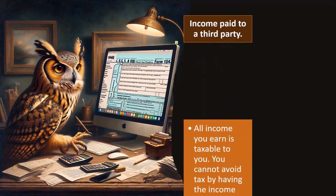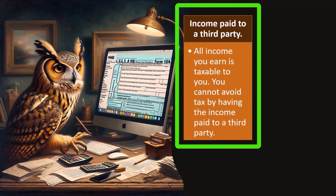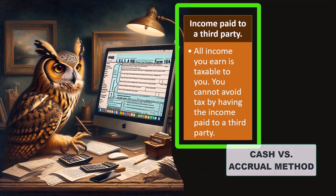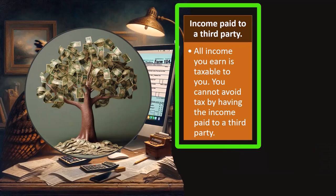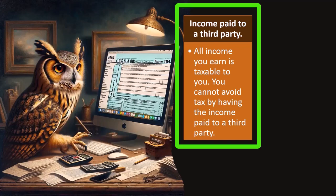Income paid to a third party: all income you earn is taxable to you. You cannot avoid tax by having the income paid to a third party. We discussed this when we talked about the income side on a cash versus accrual method. You might think, especially on a cash method, that income should only be recorded when it increases your checking account. That's the general rule, but the IRS will put exceptions in place if we try to do things just to avoid taxes, such as having income go to a third party — basically our agent or something like that.